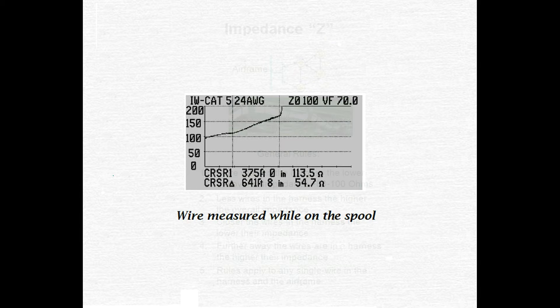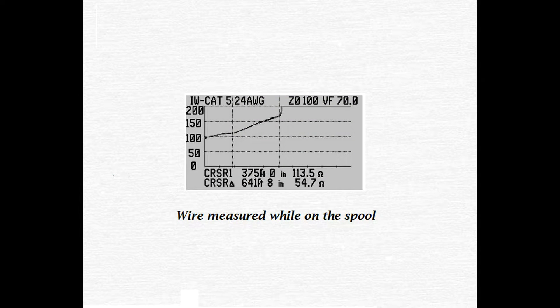Heck, let's add one more rule. Here's a trace that was done on a wire that's still on the spool. The rolled-up wire is actually interfering with its own test. To properly test this wire, you need to pull it off the spool.